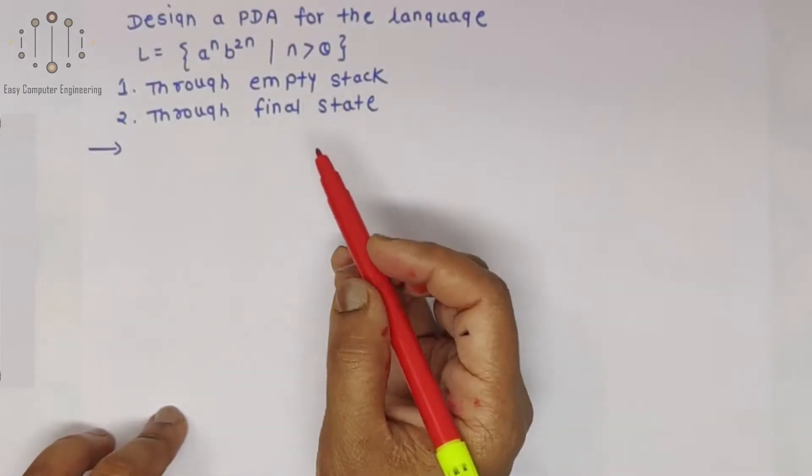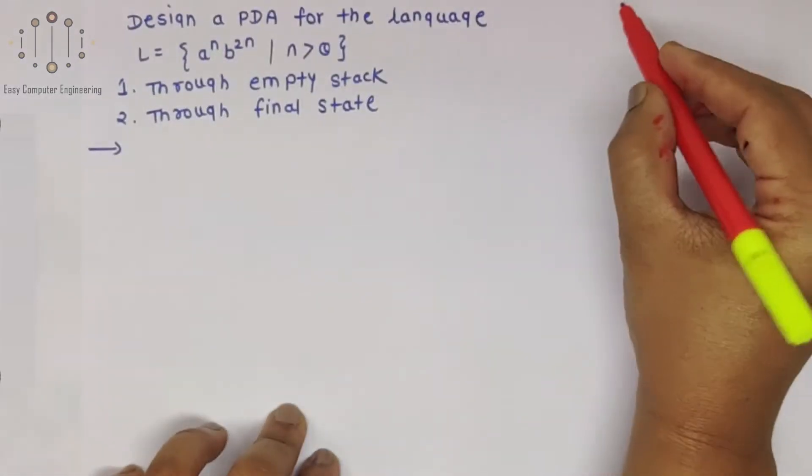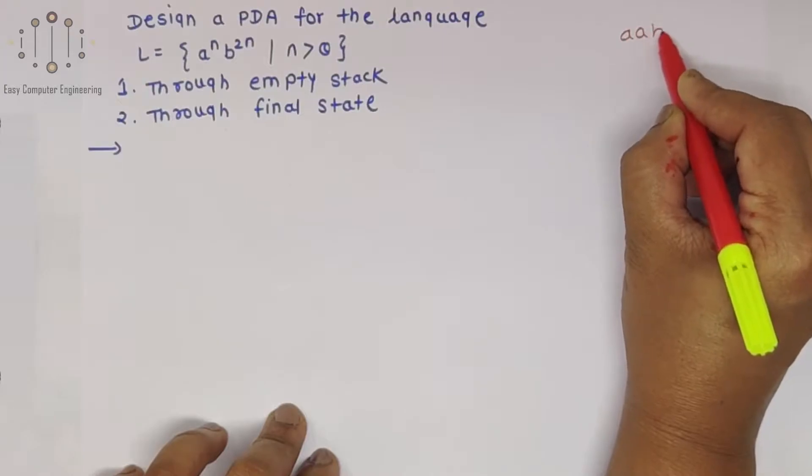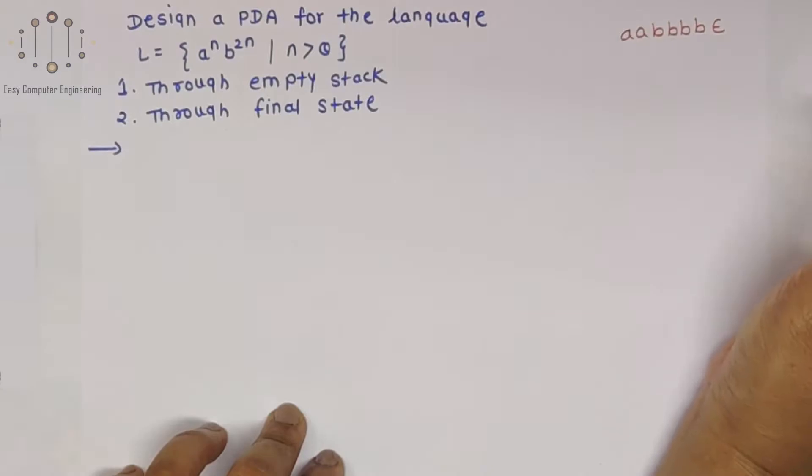Here we will see how to apply the logic for this PDA. A raised to N B raised to 2N means the string A A B B B B is accepted using this PDA.